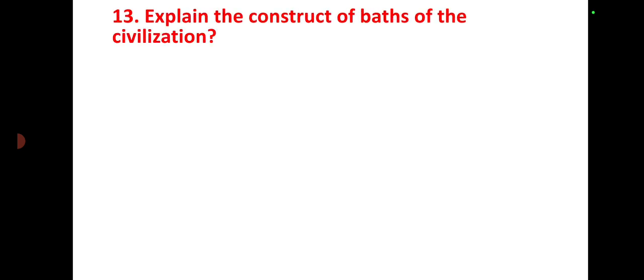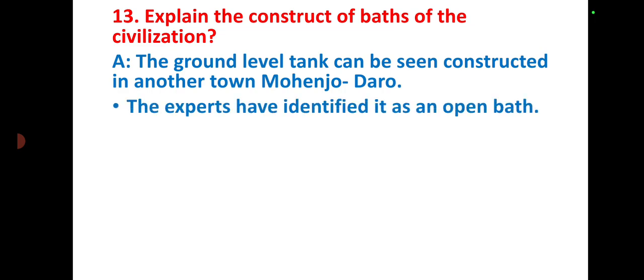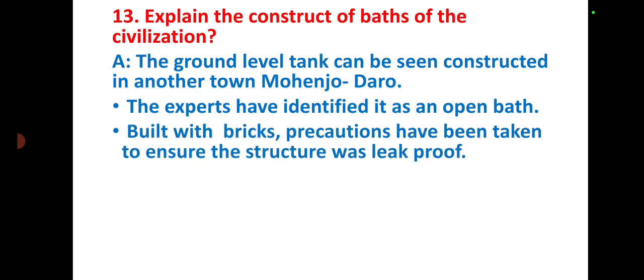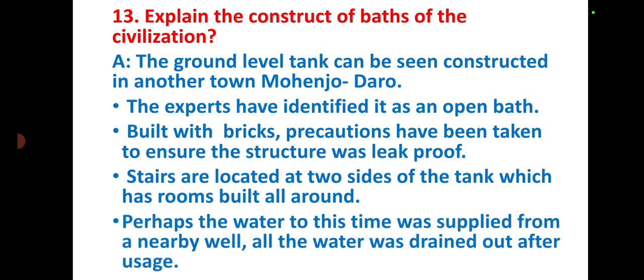Explain the construction of the baths of the civilization. A ground-level tank can be seen constructed in Mohenjo-daro. Experts have identified it as an open bath built with bricks. Precautions were taken to ensure the structure was leak-proof. Stairs are located at two sides of the tank, which has rooms built around it. Water was supplied from a nearby well and drained out after usage.